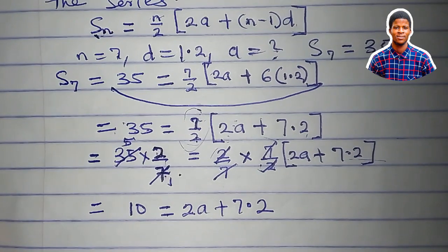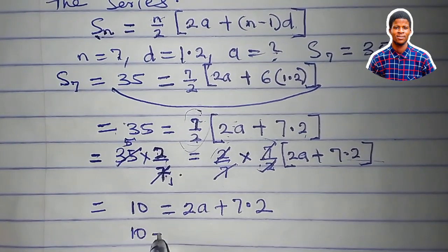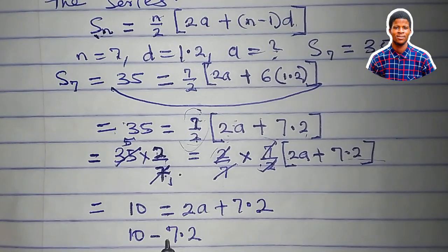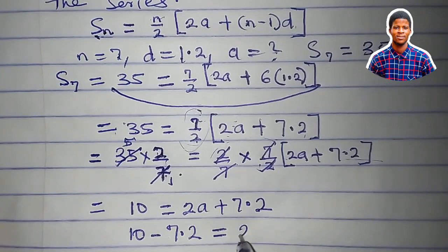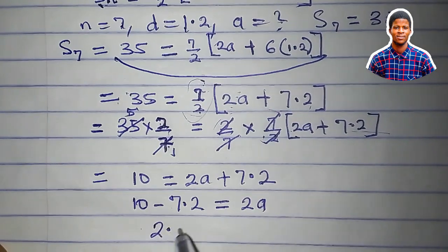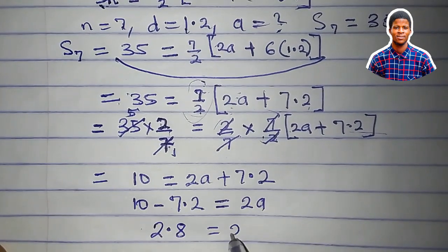Let's collect like terms now. We have 10 minus 7.2. 7.2 will cross and turn to minus. Equal to 2a. 10 minus 7.2 is 2.8 equals 2a.